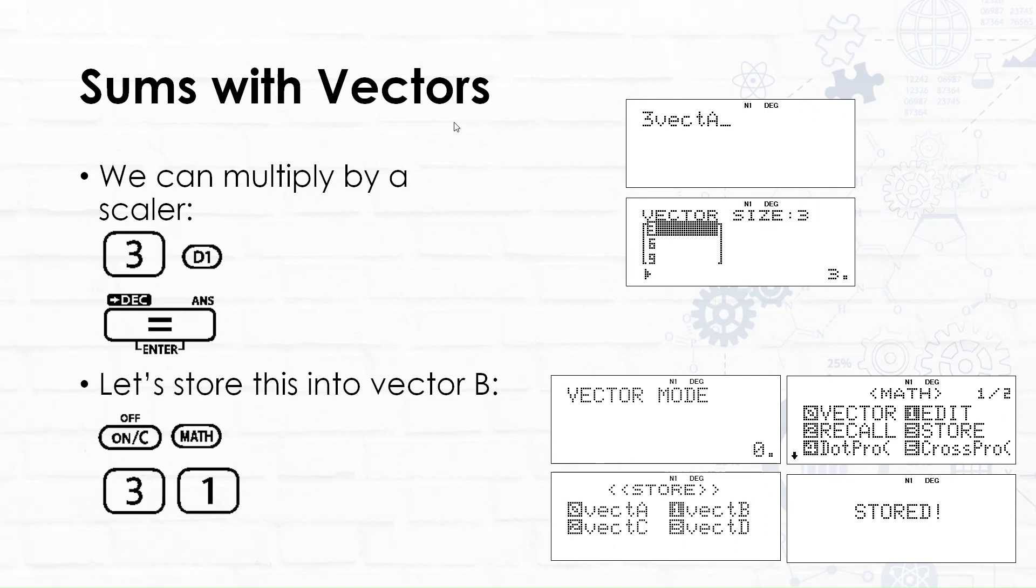Now the next important thing is that we need to do some sums. We can multiply our vectors with a scalar. I've just used the d1 key as a shortcut, but if we wanted to recall the vector, we would use math 0, 0 to do the same thing as that d1 key. You can see it's quite a bit shorter. Let's save this into the vector B button. We're going to do that now on the calculator.